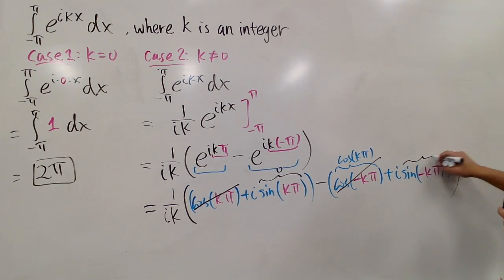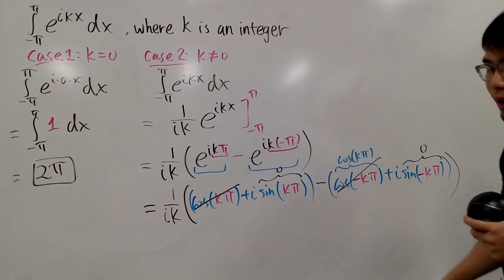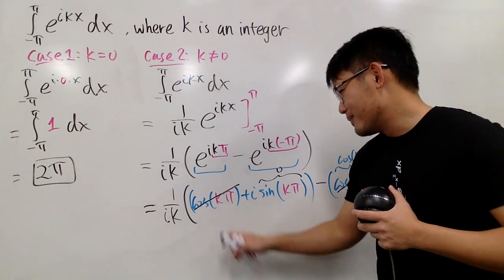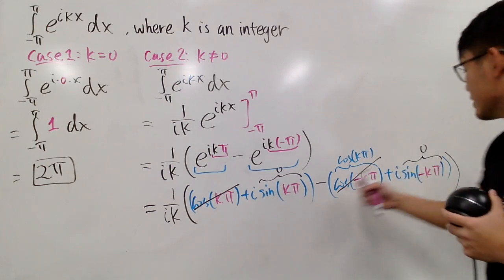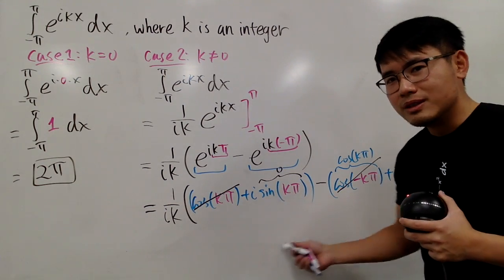Likewise, this right here is always going to be zero as well. So, what do we have? This and that, they cancel out to be zero. This is zero minus another zero. All in all, all this is just zero.